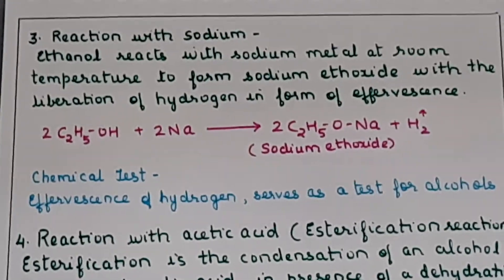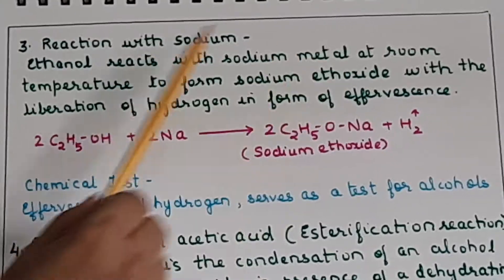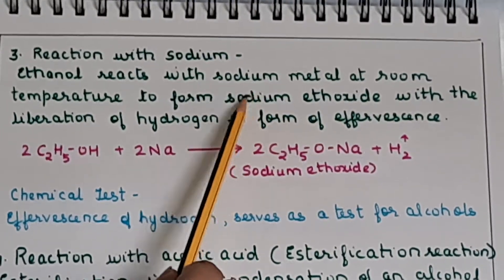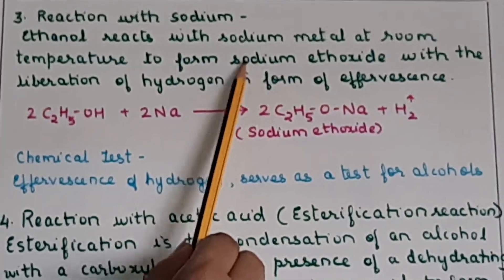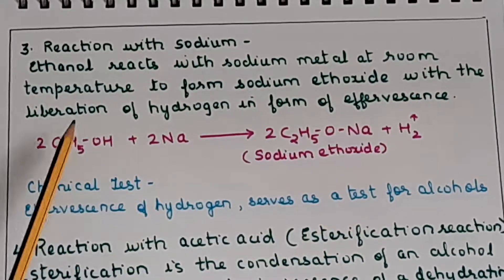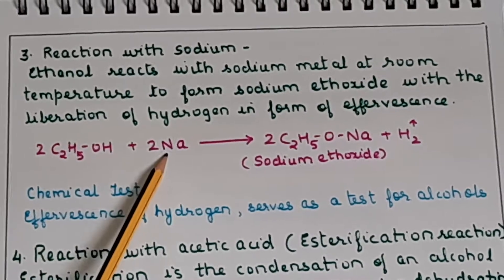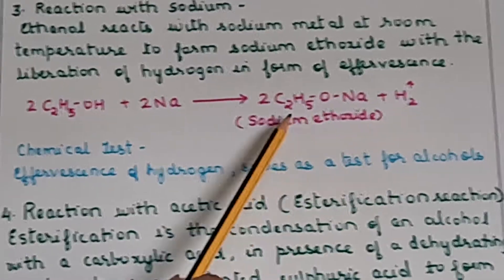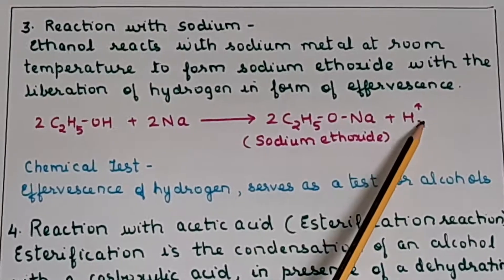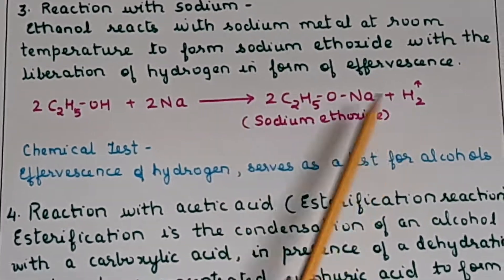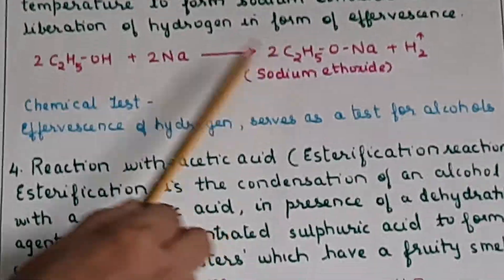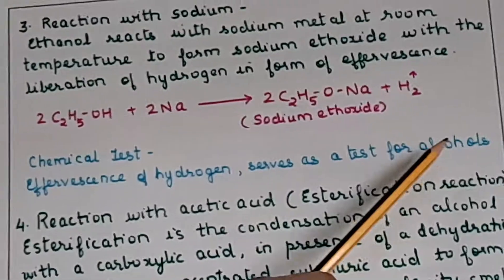The next reaction is with sodium metal. Ethanol reacts with sodium metal at room temperature to form sodium ethoxide (C2H5ONa) with liberation of hydrogen as effervescence. The reaction is: 2C2H5OH + 2Na → 2C2H5ONa + H2. The product formed is sodium ethoxide and the gas liberated is hydrogen. This is important for fill-in-the-blank questions. The effervescence of hydrogen serves as a chemical test for alcohols.